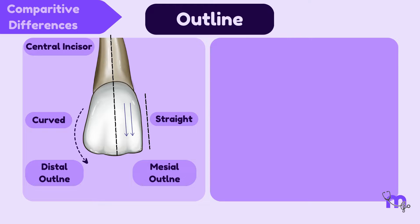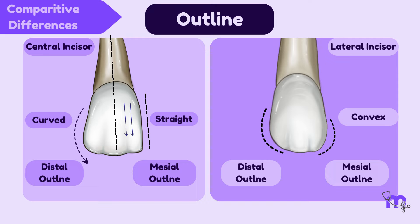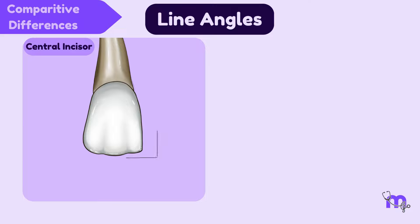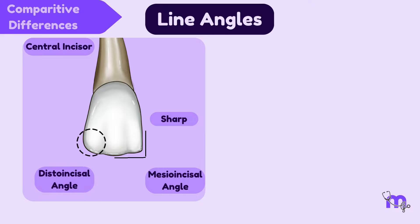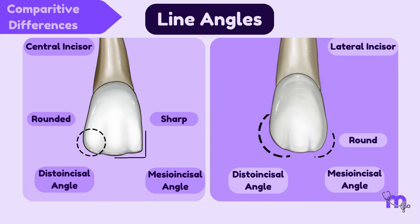In contrast, the lateral incisor presents both mesial and distal outlines with a convex shape, with slightly more convexity on the distal side. In the case of the maxillary central incisor, the mesial incisal angle appears sharp while the disto-incisal angle takes on a rounded form. In contrast, when we examine the lateral incisor, both the mesial incisal and disto-incisal angles are rounded, with a slightly more pronounced rounding observed in the disto-incisal angle.